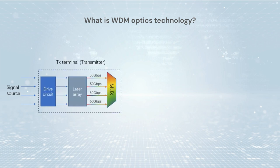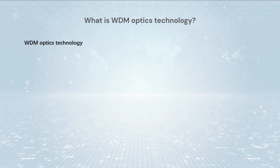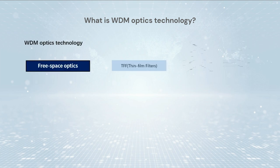What is WDM optics technology? WDM (wavelength division multiplexing) optics technology is usually used in long distance transmission. WDM is a technology that enables various optical signals to be transmitted by a single fiber, significantly increasing transmission capacity. It has been widely used in medium and long distance optical communication transmission and in the interconnection of data centers.